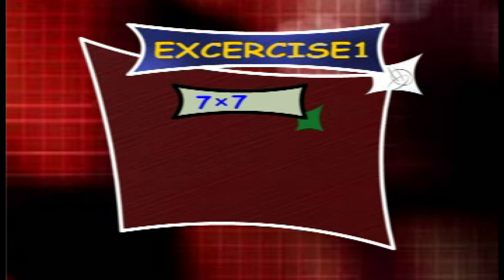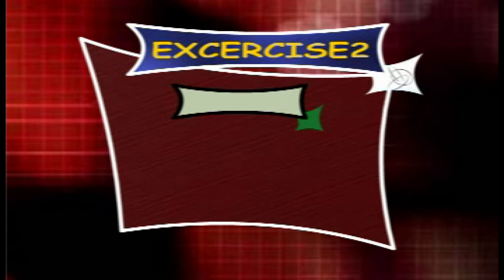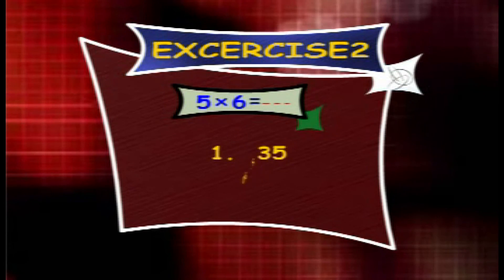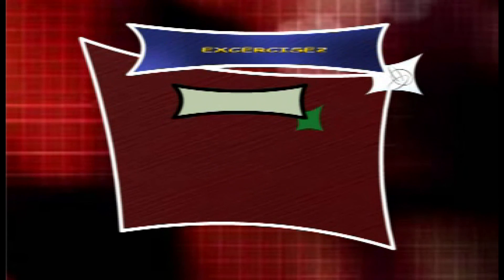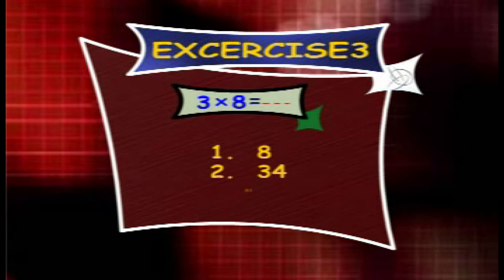Exercise 1: 7 × 7 is equal to? Options are 49, 39, 7. Exercise 2: 5 × 6 is equal to? Options are 35, 30, 28. Exercise 3: 3 × 8 is equal to? Options are 8, 34, 24.